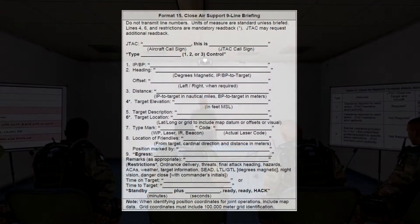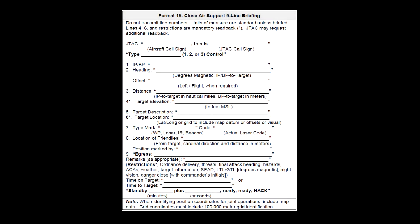First we will cover the 9-line briefing. Line 1 tells the pilot which IP to begin their attack from. Line 2 tells the pilot the bearing from the IP to the target. Line 3 tells the pilot the range from the IP to the target in meters. Line 4 tells the pilot the elevation of the target. Line 5 is for the description of the target — it can be basic or in-depth.